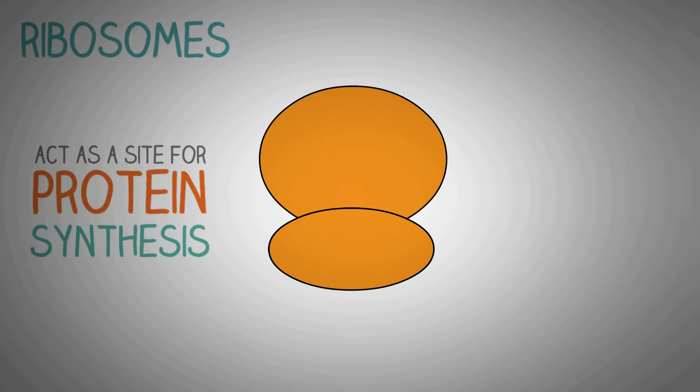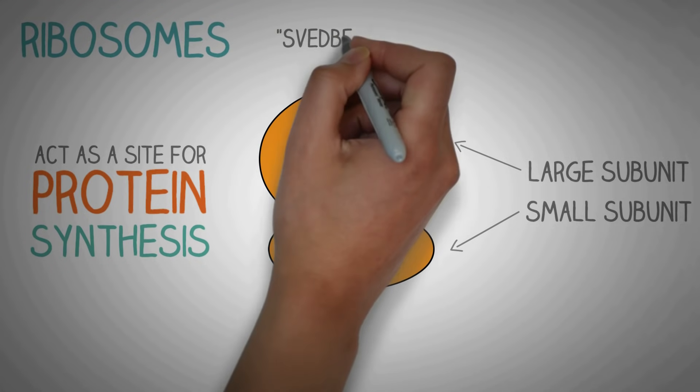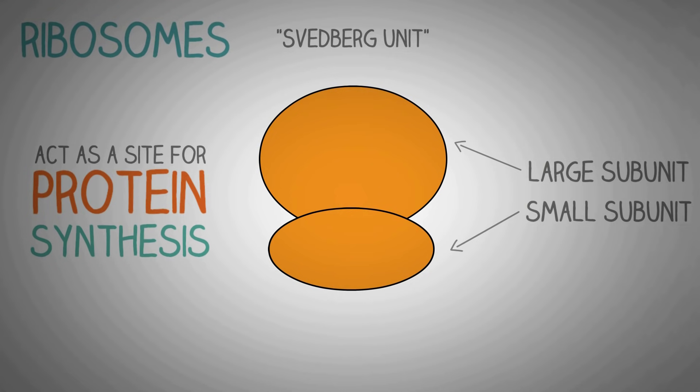The ribosomes essentially consist of two major components, a small subunit and a large subunit. The unit of measurement used to describe the ribosomal subunits is the Svedberg unit, which is a measure of the rate of sedimentation in centrifugation rather than size.